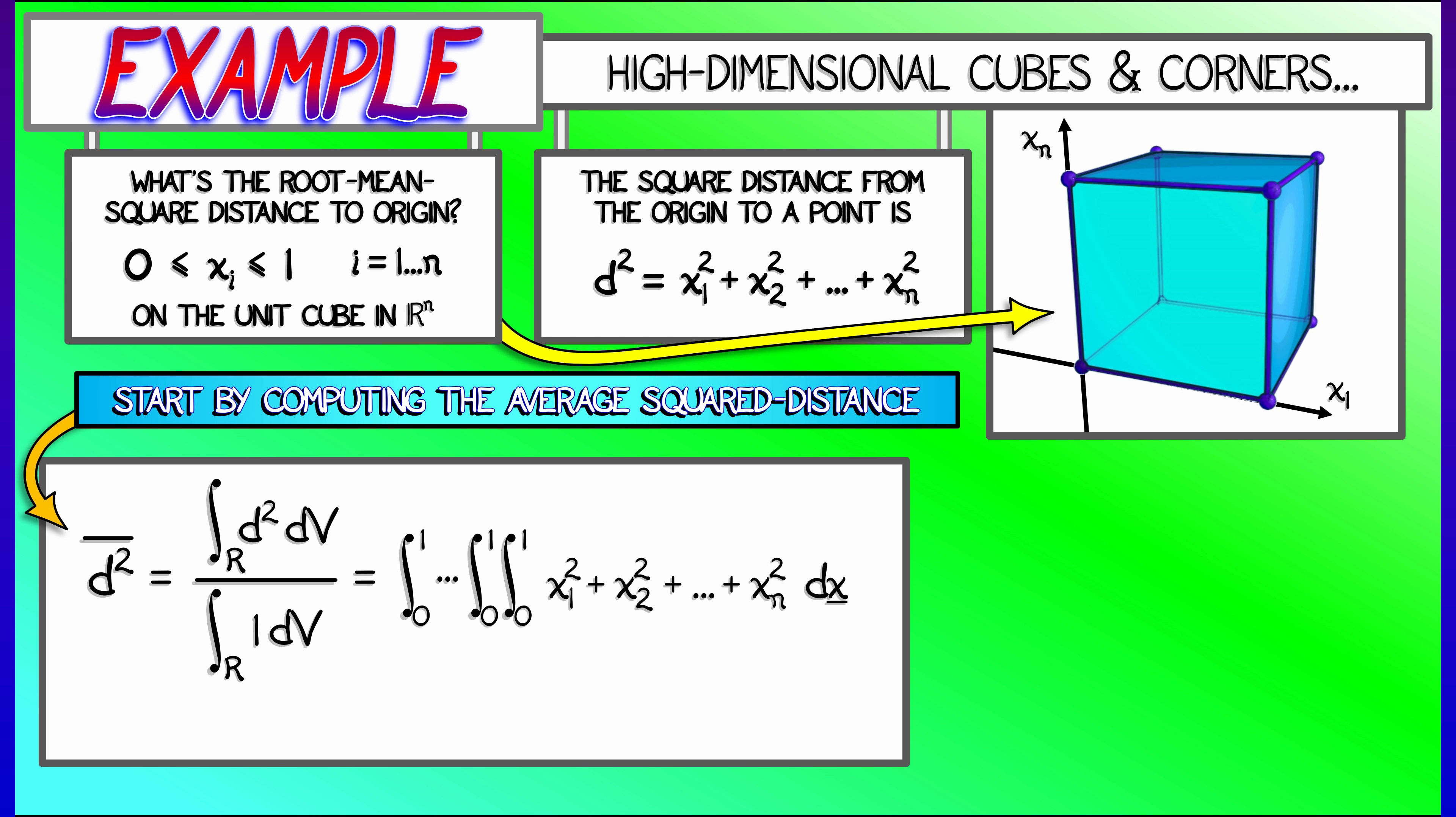Now, the integral is linear. We can break this up and just do it piece by piece. And integrating, we get one-third plus one-third plus one-third. And how many of those one-thirds do we have? Well, we have n of them.